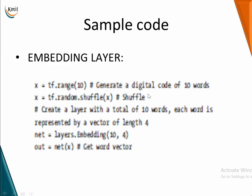Here is a sample code. You generate a digital code of 10 words, randomly shuffle them, and create an embedding layer with a total of 10 words, each represented by a vector of length 4. Using TensorFlow, from the layers module you invoke the Embedding layer, specifying 10 words with length 4, and you will get a word vector output — as simple as that.